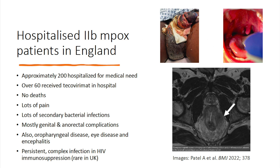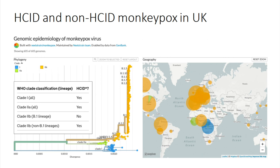More recently, we've seen some pretty nasty persistent infection with severe disease in people with very low CD4 counts, who thankfully are rare in the UK because we have such good HIV treatment. We're now in a slightly complicated situation where clade 2B is not managed as HCID, whereas all the other strains are still supposed to be managed as HCID. That's currently under review.